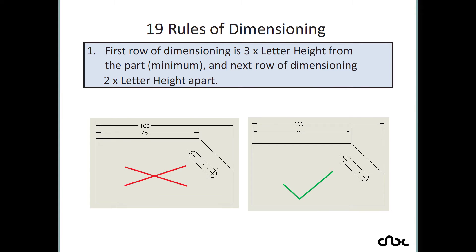Rule number 1: the first row of dimensioning is 3 letter heights from the part, and the next row of dimensioning is 2 letter heights apart. Your first dimension should be placed 3 letter heights from the part and the next dimension 2 letter heights from the first. Some tools offer autosnap to achieve this automatically, but for those that don't, you need to place dimensions carefully per this rule.